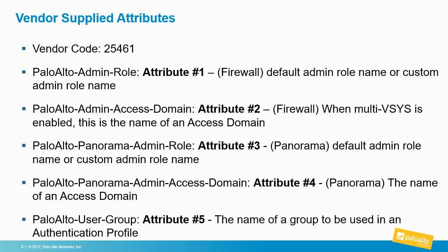There are additional VSA attributes available beyond attribute one. If the firewall has multiple VSYS, you would define which VSYS or access domain the admin should administer. If you have Panorama, you can configure the role and access domain for Panorama. And with attribute five, if you've defined local groups in the firewall, the admin account can be associated with a local user database group in this way.